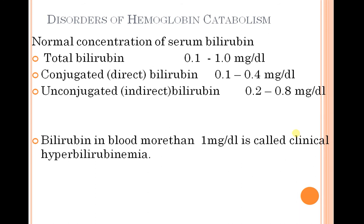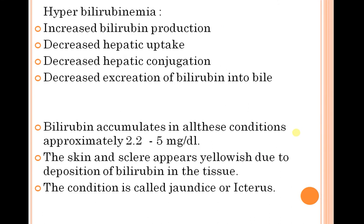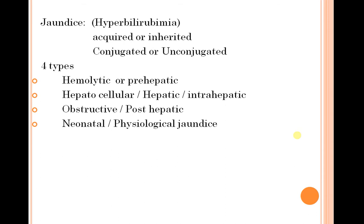What are the disorders of catabolism? The normal bilirubin level is 0 to 1.0 milligrams per dl. When bilirubin exceeds 1.0, it is called hyperbilirubinemia. Hyperbilirubinemia involves increased bilirubin production, decreased hepatic uptake, decreased hepatic conjugation, and decreased excretion of bilirubin into bile. When bilirubin accumulates to approximately 2.2 to 5 milligrams, the skin and sclera appear yellowish due to deposits of bilirubin in the tissues — a condition called jaundice or icterus. Jaundice may be acquired or inherited, conjugated or unconjugated, and is observed in four major types.